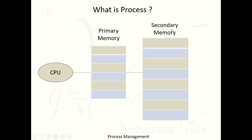Let's start with the basic components of a computer system. Here you are looking at secondary memory — secondary memory means your hard disk, whatever laptop or computer you are using, like 500 GB or 1 TB. That is your secondary memory. And here there is primary memory — primary memory means your RAM, like 4 GB or 8 GB RAM. And here is the central processing unit — your processor, whatever the configuration, like 1 GHz or 2 GHz.